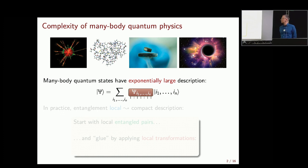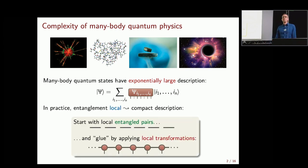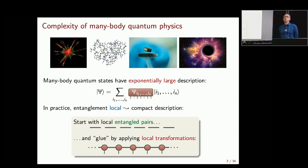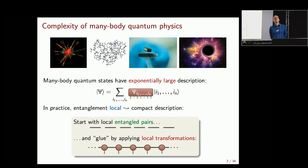The starting point for tensor networks is that many-body quantum states have an exponentially large description — even writing them down naively on a classical computer is hard. But we don't care about generic states; we care about ground states, low energy states, and other physically interesting states. If interactions are local, maybe the entanglement is also local, and you can sort of play Lego with your quantum states — building many-body states by local entanglement and gluing them together.